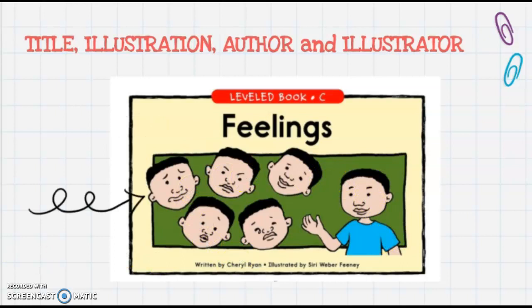Now my arrow is pointing to something different. It's pointing to the pictures, and those pictures are also known as illustrations. Everybody say: illustration. And that word is just a fancy word for pictures in the text. So on the front page, we have a picture or an illustration that also helps us know what the book is going to be about.